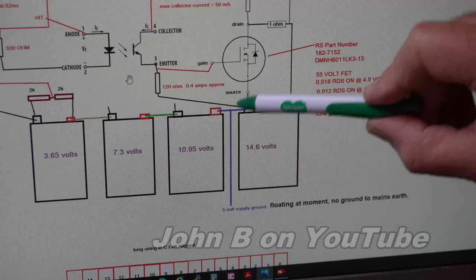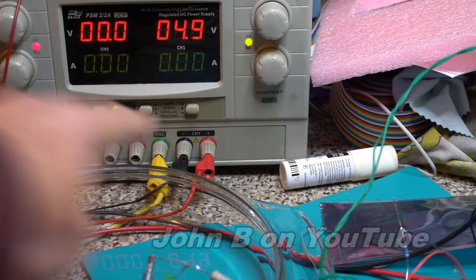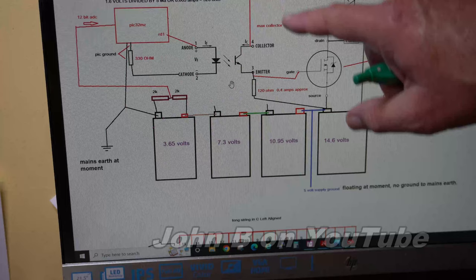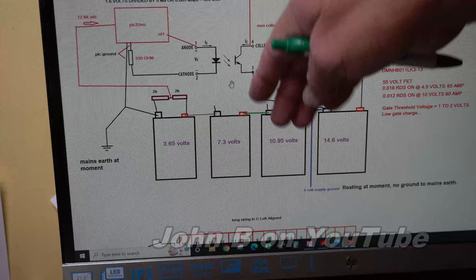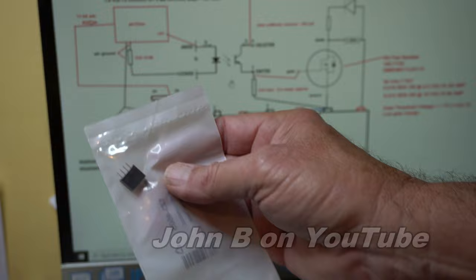Back to the age old problem. This 5 volt supply is currently got a floating earth, no ground. That's that one over there. So just like the ADC, I can't connect this, I can't reproduce this circuit and stick this there, there and there, because I'll be shorting out all the grounds. So I think the best option are hopefully these.